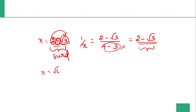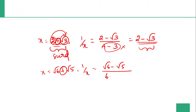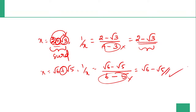x is equal to root 6 plus root 5. So 1 by x: using conjugate multiplication, 1 by x equals root 6 minus root 5. Root 6 square is 6, root 5 square is 5, so the denominator is 6 minus 5 which is 1. So the numerator is root 6 minus root 5. This is conjugate multiplication.